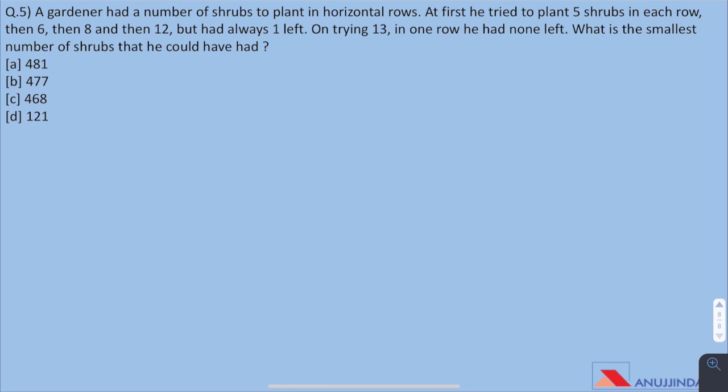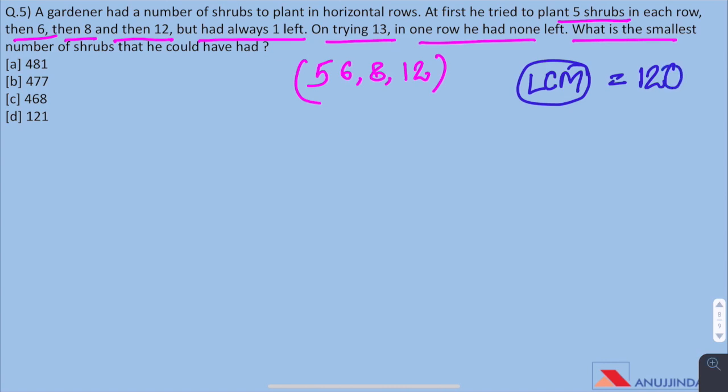Question 5: A gardener had a number of shrubs to plant in horizontal rows. At first, he tried to plant 5 shrubs in each row then 6 and then 8 and then 12 but had always one left. On trying 13 in one row, he had none left. What is the smallest number of shrubs that he could have had? Here, the numbers in which he planted his plants are 5, 6, 8 and 12. LCM is 120 and as per the condition given in question, we see that 120K plus 1, this number is divisible by 13.